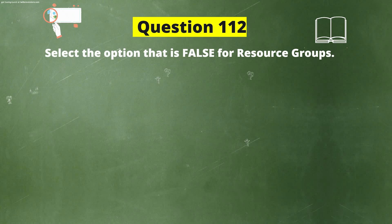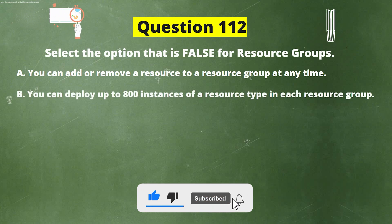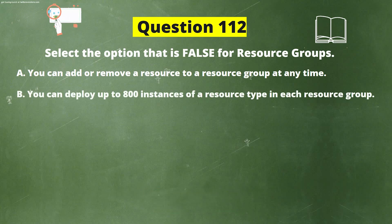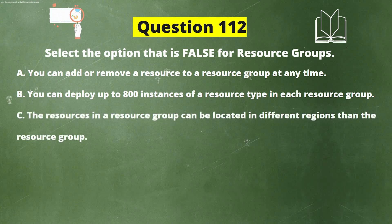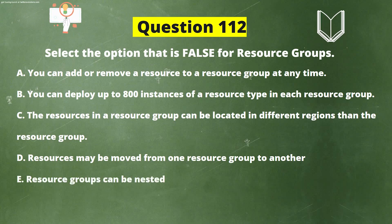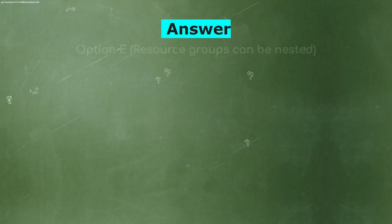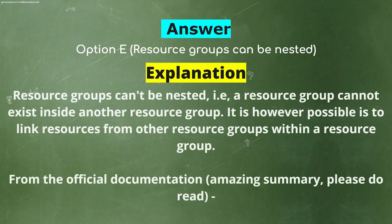Next question. Select the option that is false for resource groups. Option A: You can add or remove a resource to a resource group at any time. Option B: You can deploy up to 800 instances of a resource type in each resource group. Option C: The resources in a resource group can be located in different regions than the resource group. Option D: Resources may be moved from one resource group to another. Option E: Resource groups can be nested. Option F: A resource can only belong to one resource group. The correct answer is Option E, Resource groups can be nested.